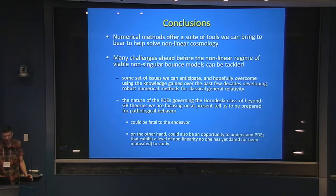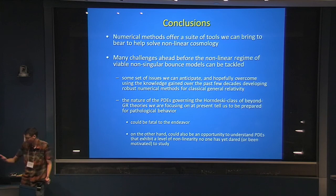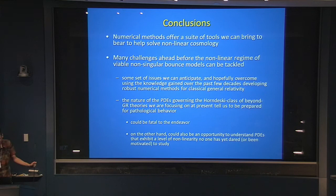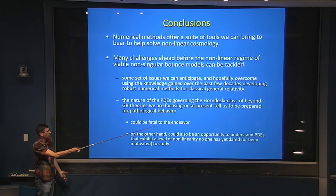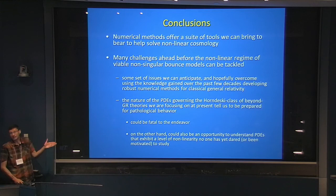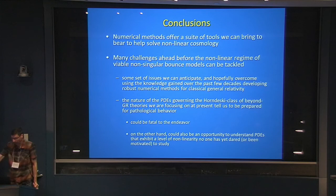In conclusion, numerics is just a new set of tools that can be brought to bear in cosmology, and it's going to be relevant in situations where nonlinearities are interesting. There are many challenges ahead — some we can borrow from what we've learned in the binary black hole problem in classical GR. Some might be really problematic and fatal for a theory. But perhaps, like those three examples I've shown, this is an opportunity to study a new class of nonlinearities that hasn't been studied before, and discovering how to get past those could be an interesting thing to find in the future. Thank you.